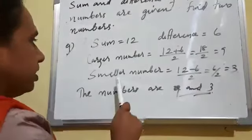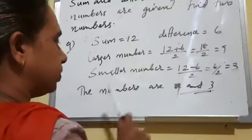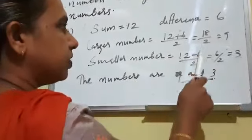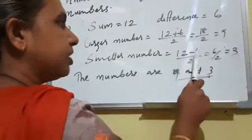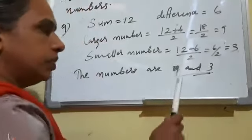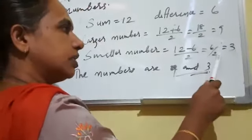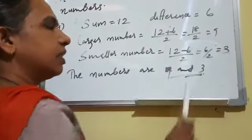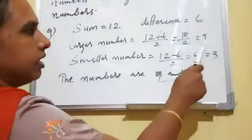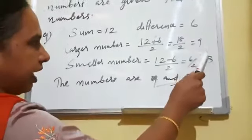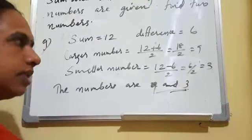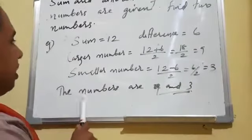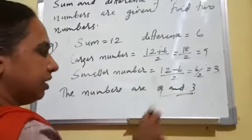Next, the smaller number equals sum minus difference divided by 2. Here, 12 minus 6 equals 6, divided by 2 equals 3. So the smaller number is 3 and the larger number is 9. The two numbers are 9 and 3.